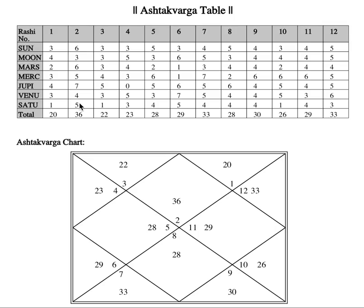Now let us go to Virgo, number six — his fifth house. Again, Saturn has a huge contribution there, and Jupiter also has a huge contribution. But now the game changes — Moon and Venus have become the king here: Moon six points, Venus seven points.